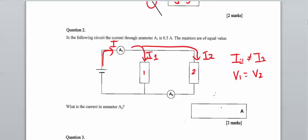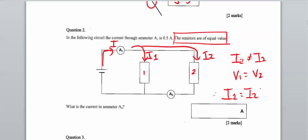What is the current through A2? The question states that the resistors are equal value. So if they're equal value, then we know the current through branch 1 is going to equal the current through branch 2. Because we've got 0.5 amps total, that current is going to split, and we're going to get 0.25 amps for each branch.